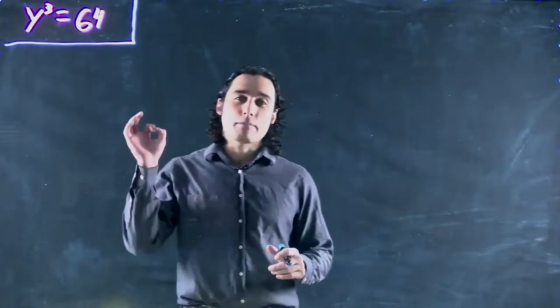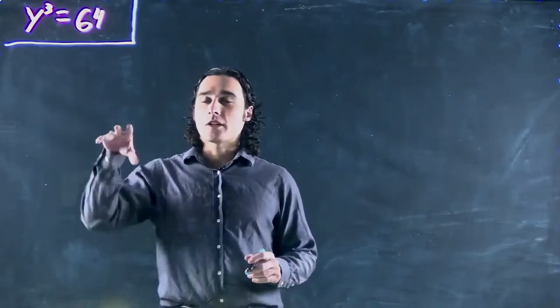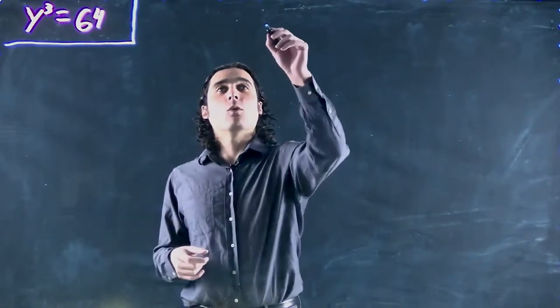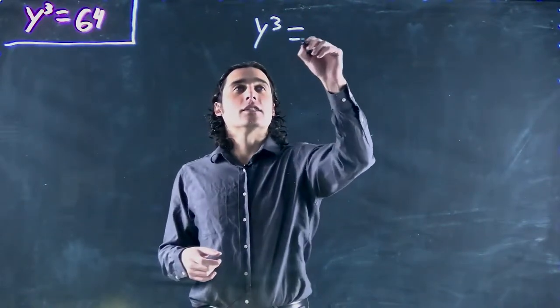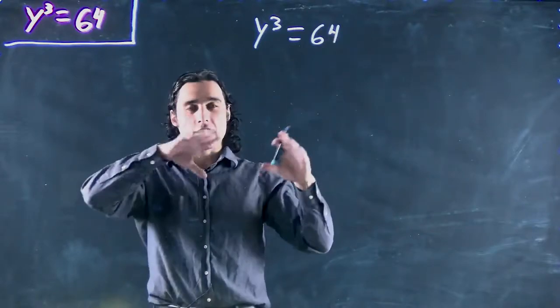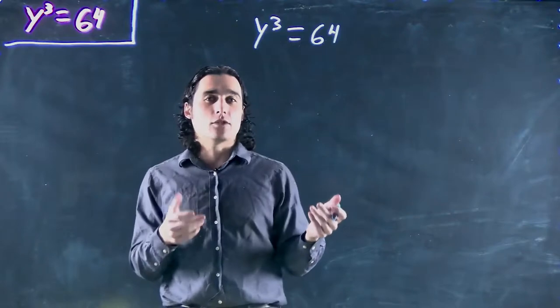Okay, so we're looking at power functions and we're going to start looking at solving a power function equation. In this case we've got y cubed is equal to 64. So in this case it's already been solved and rearranged. It's all in a nice simplified form for us.